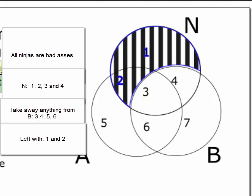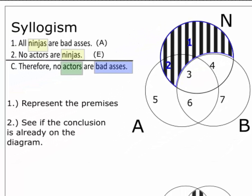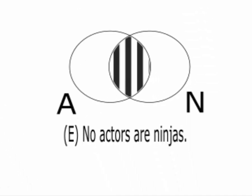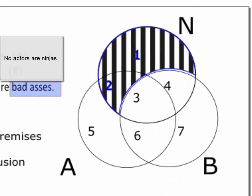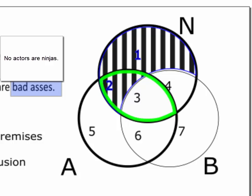That indicates that the area originally dedicated to ninjas who are not badasses is empty. Our next premise says that no actors are ninjas, which is an E statement. Let's compare it with an E statement diagram when we have one statement. We need to shade the intersection of the two sets. Once again, the orientation is a little different. But it's easy enough to find the intersection of actors and ninjas. It's the zone composed of both regions 2 and 3. So we shade that.